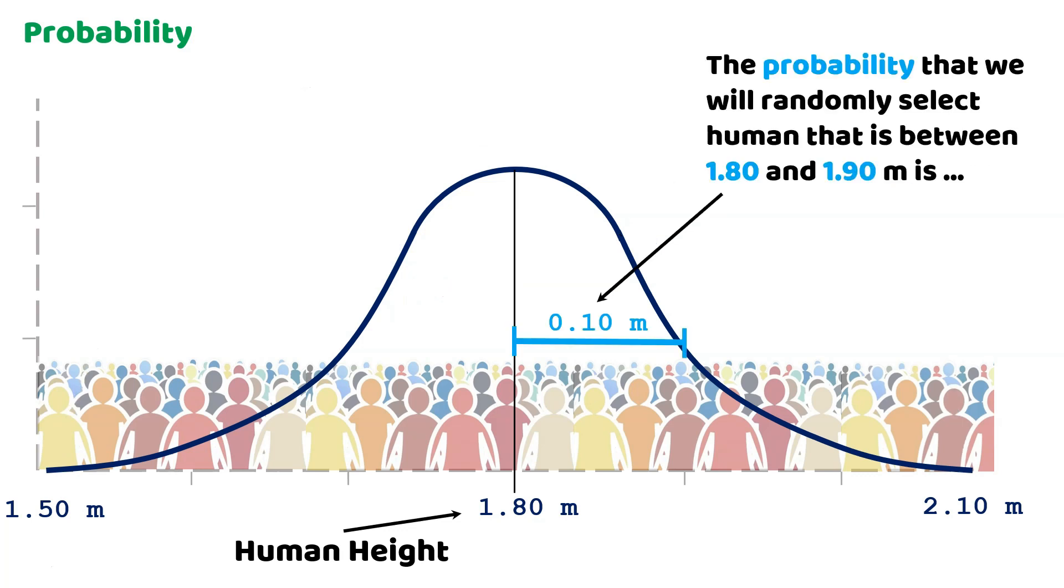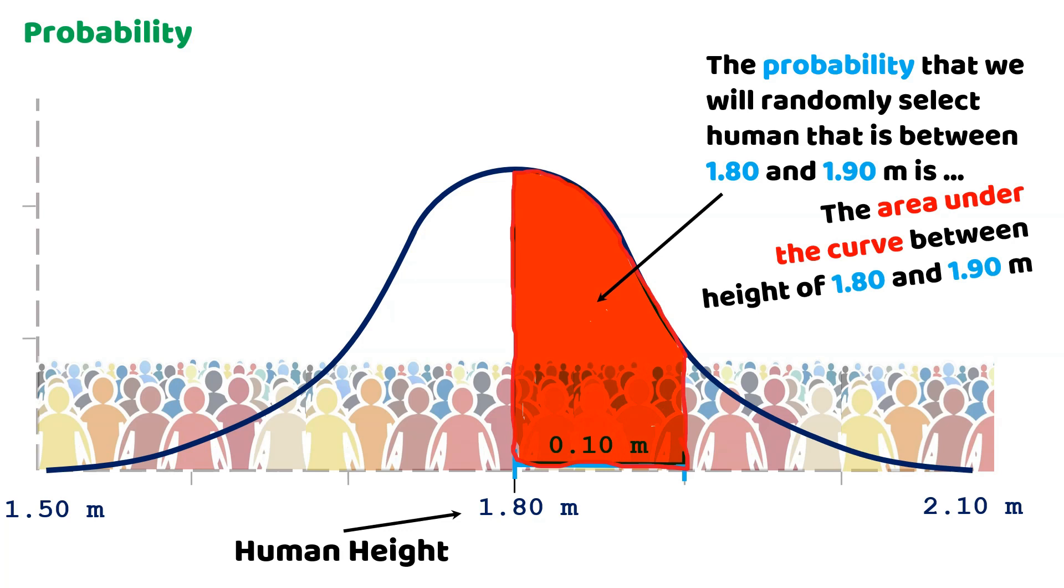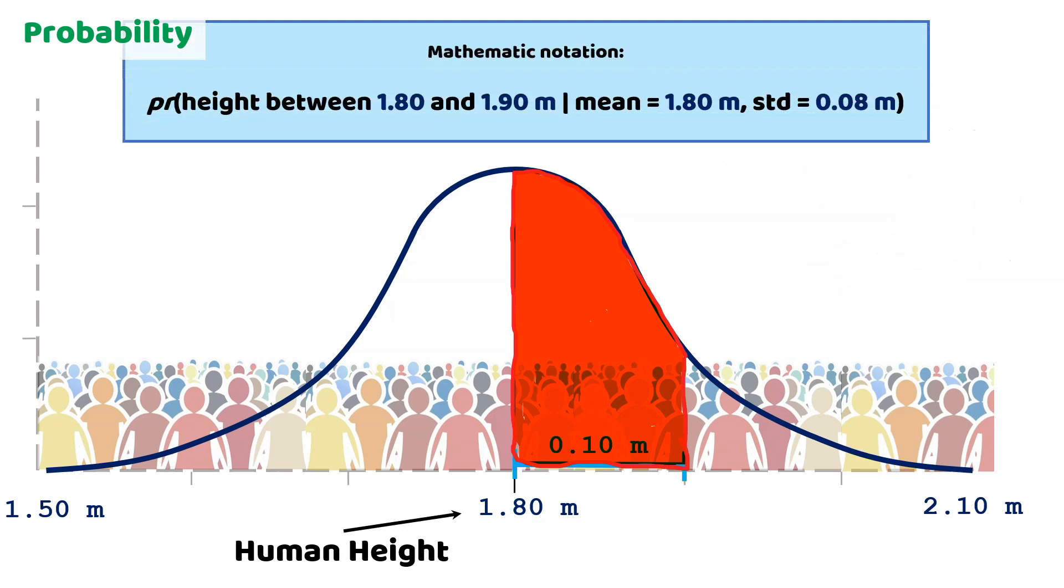The probability that we randomly select a human that is between 1.80 and 1.90 meters is the area under the curve between heights of 1.80 and 1.90 meters. Mathematically, we express this with the following notation: the probability of taking a human between 1.80 and 1.90 meters of height, given the mean of the distribution is 1.80 meters and the standard deviation is 8 centimeters, equals 30 percent.